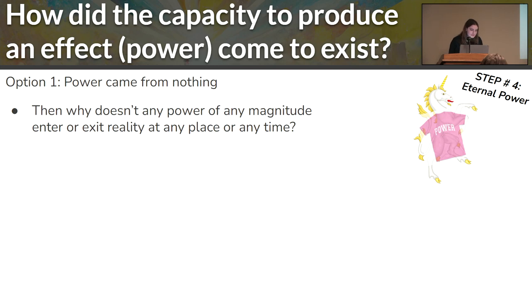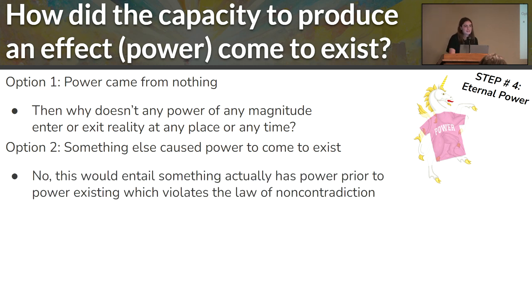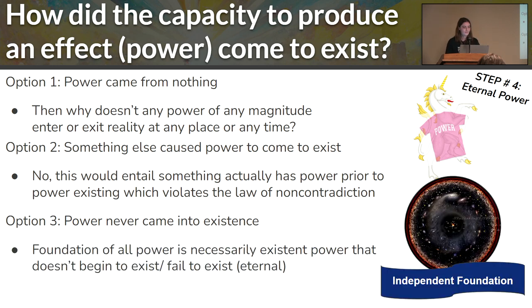The second option is that something else caused it to come into existence. This is actually just as problematic as the first option, because that would entail something was actual prior to actuality existing. So that is also an issue. Then the third option is that it never came into existence, that power or the capacity to produce causes has always been around. And that means it's part of the foundation. It's part of this independent something in the world. And it can't fail to exist.